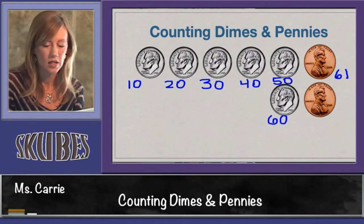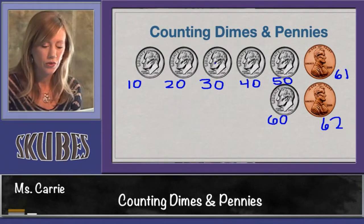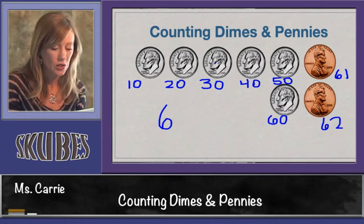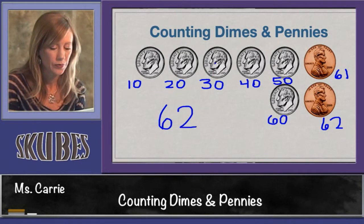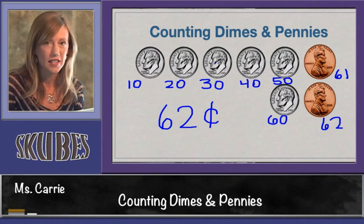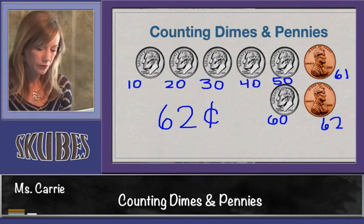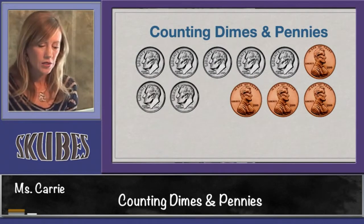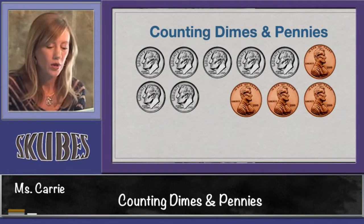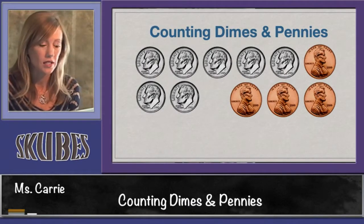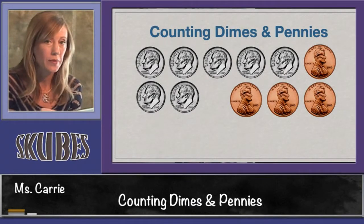Sixty-two. This group of coins equals sixty-two cents. Let's try another group. This group has seven dimes and four pennies. Let's start off counting by tens.